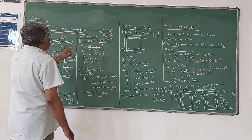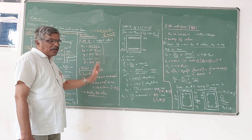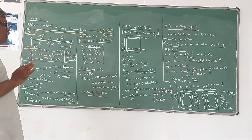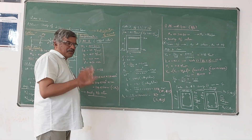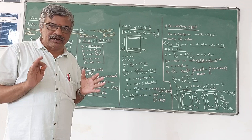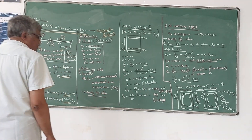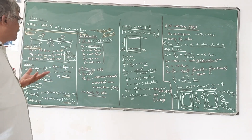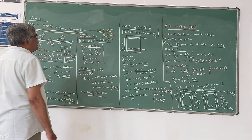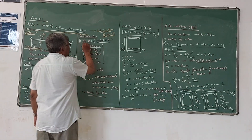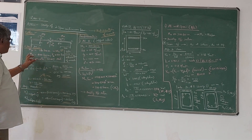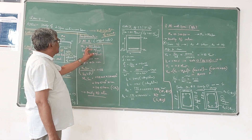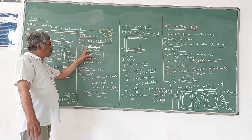The reinforcements are calculated using SP-16 directly. I am not going to use IS456 equations for solving this problem. All of you should know how to use SP-16, as it directly gives reinforcement and spacing of stirrups, saving a lot of time. I will first take the support section at B, where the design moment Mu is 300 kNm.